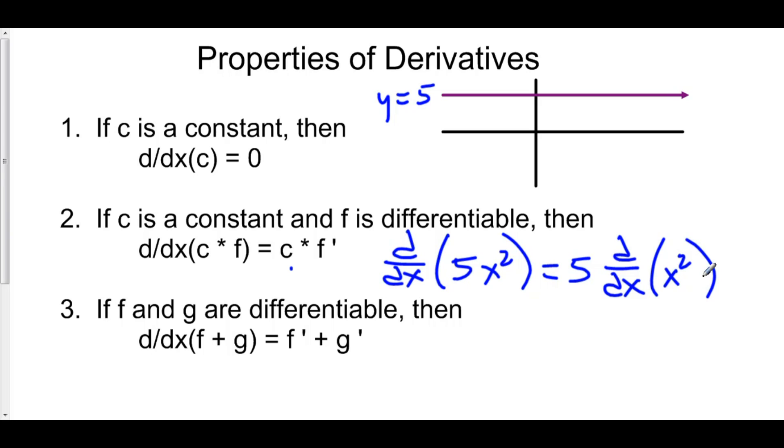Number three says that if f and g are both differentiable, then the derivative of f plus g is just f prime plus g prime. This comes in really handy for, for example, polynomials, where you could have x squared plus 3x minus 2.